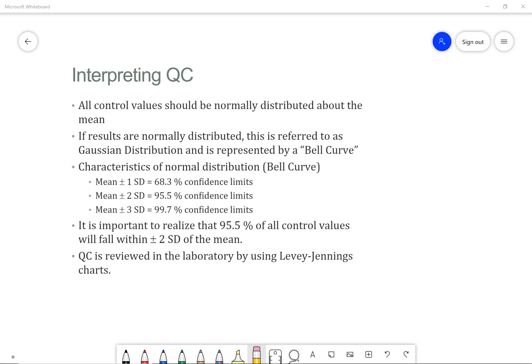The mean plus or minus 1 SD gives us confidence limits of 68.3%. So all that means is that 68.3% of the time, our results are going to fall within a plus or minus 1 SD range. The mean plus or minus 2 SD gives us higher confidence limits at 95.5%. And this mean plus or minus 2 SD is actually what we use in the laboratory.